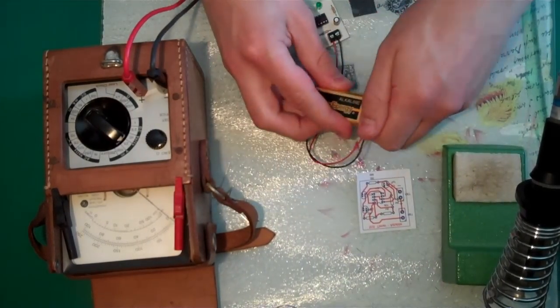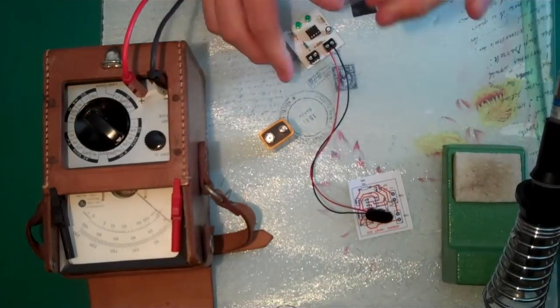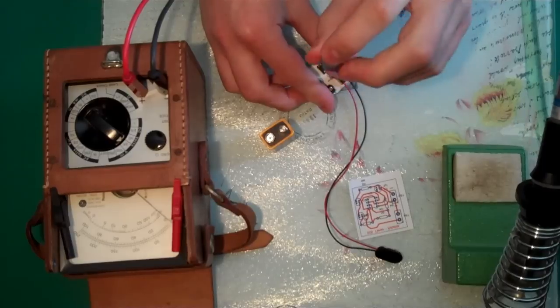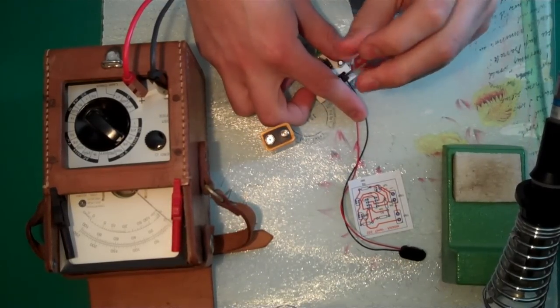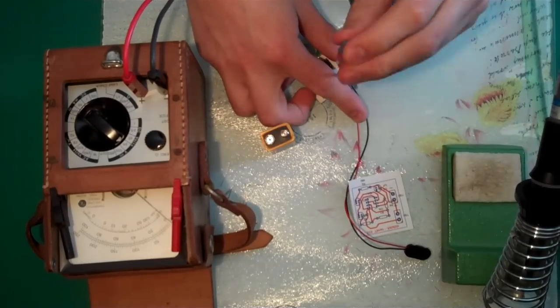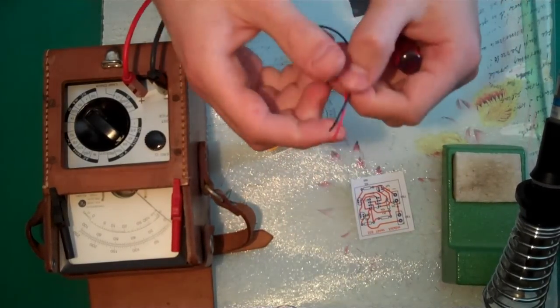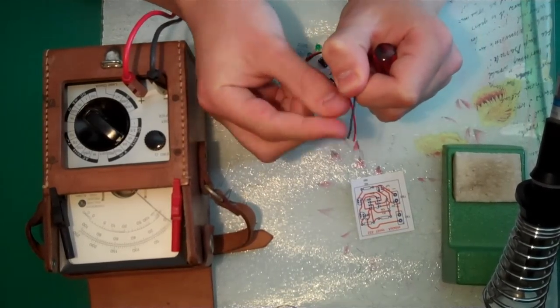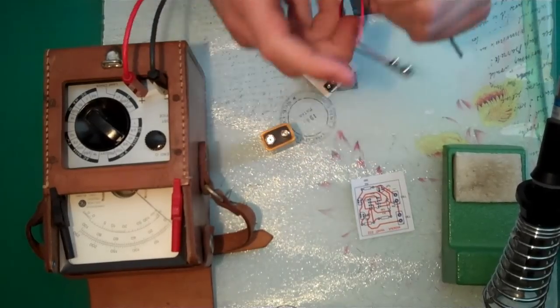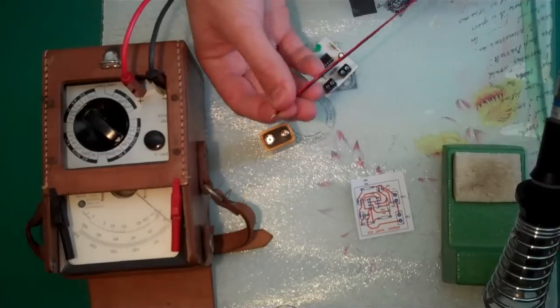And the reason for this is, if I just undo the battery clip. I'm not sure if you'll be able to see it. The end of the red wire isn't stripped on the battery clip, but the black one is. So I've got another battery clip here which is stripped on both ends.